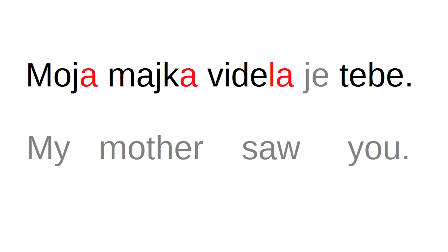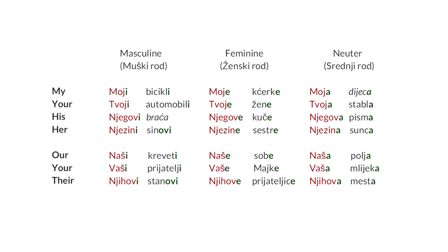The next part is how to say them in plural — how to make my bicycles, your cars, his brothers. For the masculine words, to make them plural we need to add an I after the word. The possessive will agree with the noun, so it will also get an I. My bicycles is Moji bicycle. Tvoji automobili.